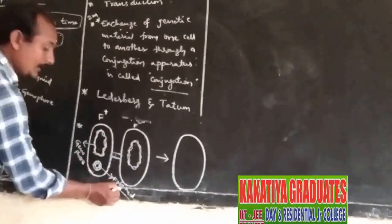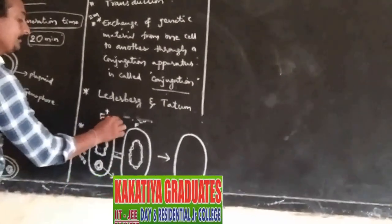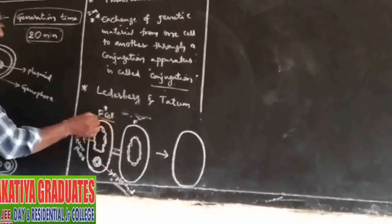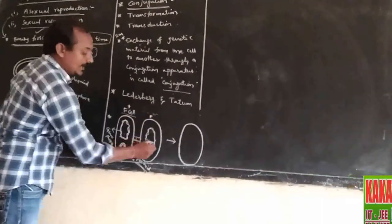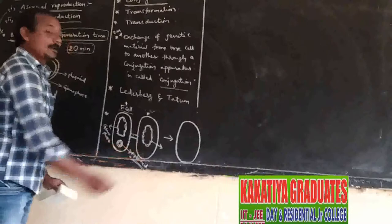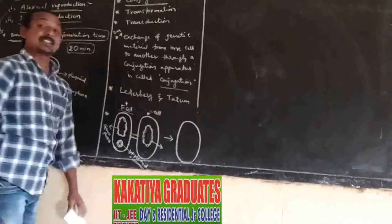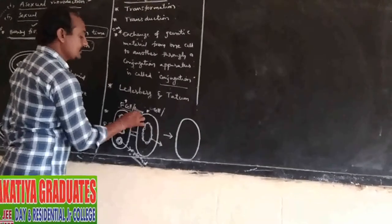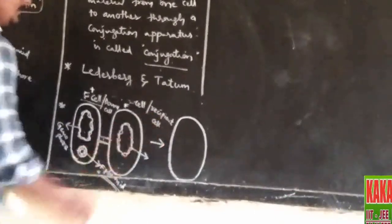The bacterium cell with F-plasmid is called the F-plus cell, or donor cell. Another cell that contains only the main genetic material, the genophor, with an absence of plasmid DNA, is called the F-minus cell, or recipient cell.